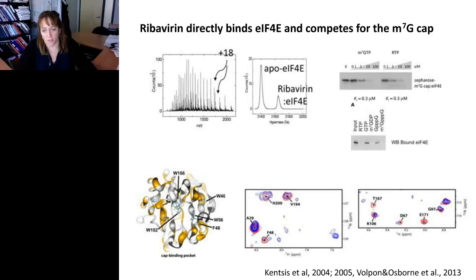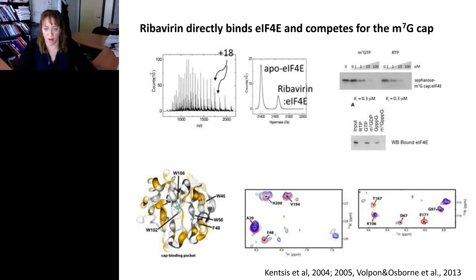Also by a simple cap competition column — adding 4E to a column with a cap resin and competing with either high levels of cap analog M7-GTP or high levels of the active metabolite of ribavirin, RTP — you can compete off 4E with similar efficiency, yielding similar KIs. A similar experiment was done by Ivan Topisirovic, now at McGill, showing that GTP and GPPG cannot compete 4E off, whereas RTP and methylated cap analogs M7-GDP or M7-GPPG all efficiently do so, indicating using purified components that 4E directly binds ribavirin.